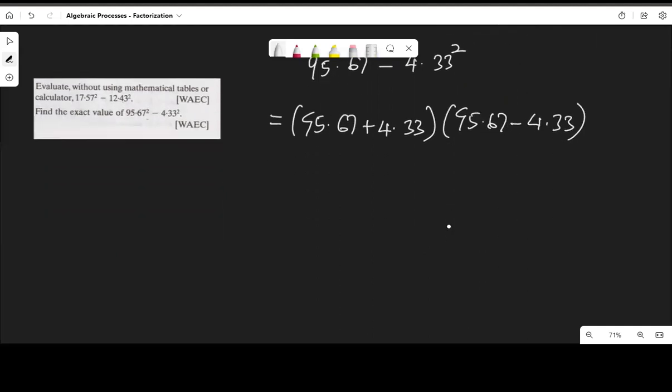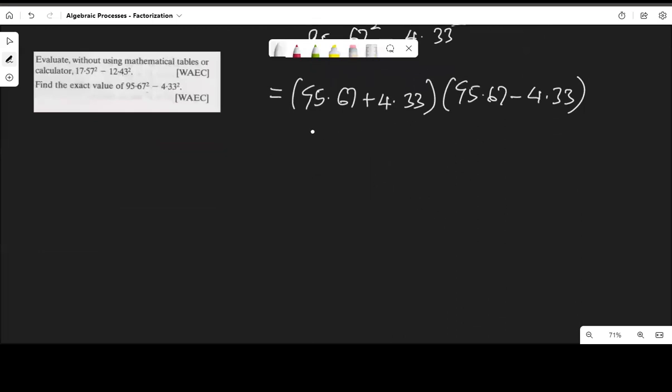Adding these together, 95.67 plus 4.33 equals 100. Then subtracting, 95.67 minus 4.33: 7 minus 3 is 4, 6 minus 3 is 3, and 95 minus 4 is 91, giving us 91.34.